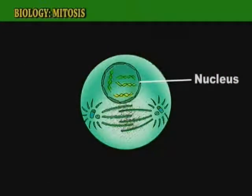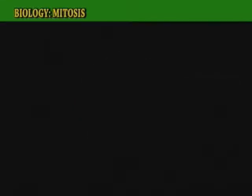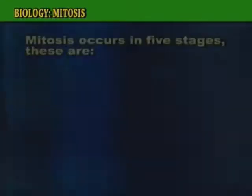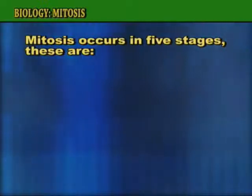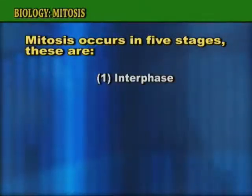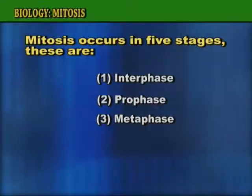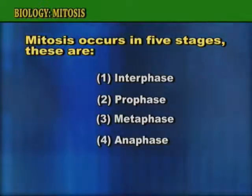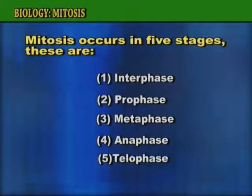Cell division occurs inside the nucleus. Mitosis occurs in five stages: interphase, prophase, metaphase, anaphase, and telophase.